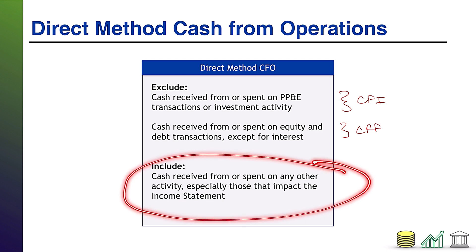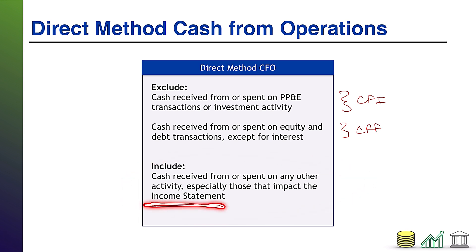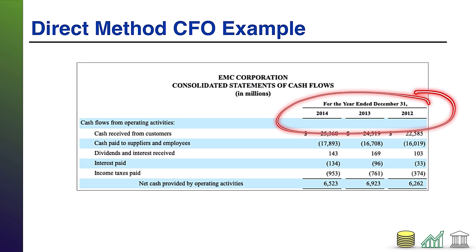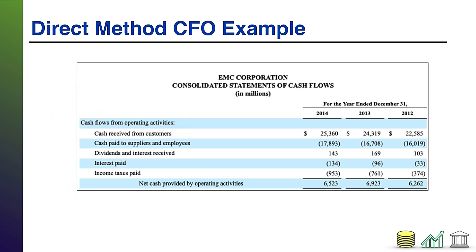Specifically, it's going to be those items that impact the income statement. The income statement is also known as the statement of operating activity or the statement of operations. So if something appears on your income statement, and it's cash related, it's going to go in the operating cash flow section of your direct method statement of cash flows. Here I have an example from EMC Corporation — it's a rather old example, but it gets the point across, covering 2012, 2013, and 2014. I've cut out the CFO section of their direct method statement of cash flows.